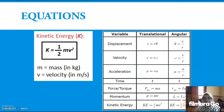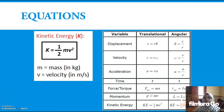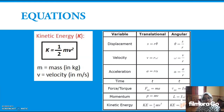The equation for kinetic energy is: K = ½mv², where m is mass in kilograms and v is velocity in meters per second. There are also other equations we can use for kinetics, including displacement, velocity, acceleration, time, force or torque, momentum, and kinetic energy.